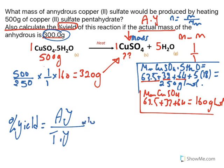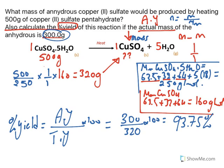So as always, the percent yield is the actual yield over the theoretical yield multiplied by 100. So it is 300 divided by 320 multiplied by 100, and the answer is 93.75 percent.